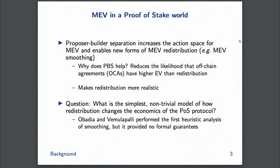MEV in a proof-of-stake world becomes a lot more interesting. If you were here earlier at the panel, you may have heard Triram talk about the lack of adaptivity of proof-of-stake being a problem — there's this trilemma between proof-of-stake and proof-of-work, where you need to know the stake distribution before you can sample how things change. But on the other hand, because you know the stake distribution, you could redistribute MEV much more efficiently.